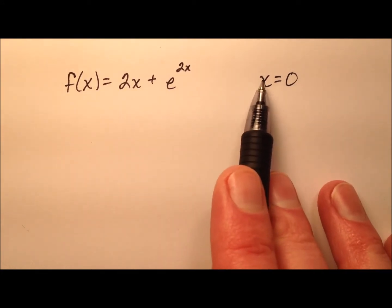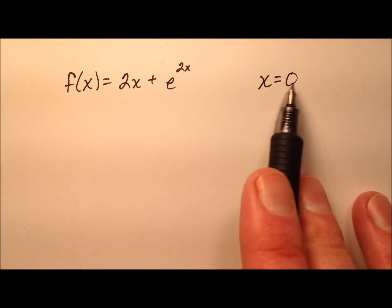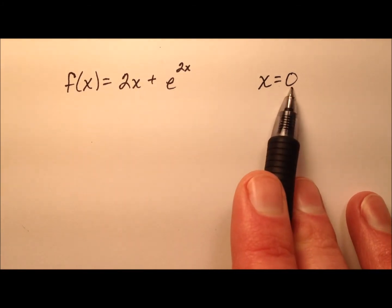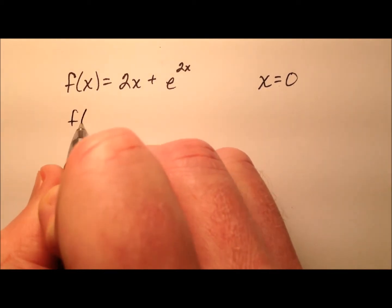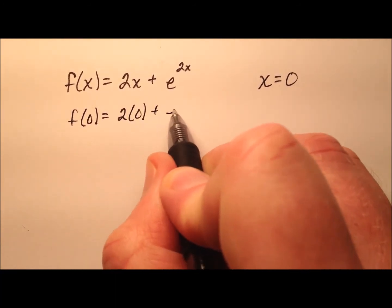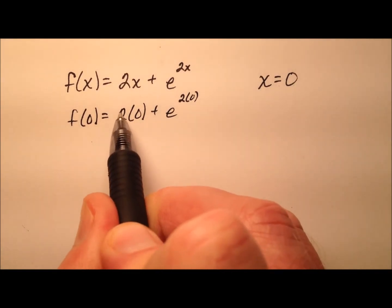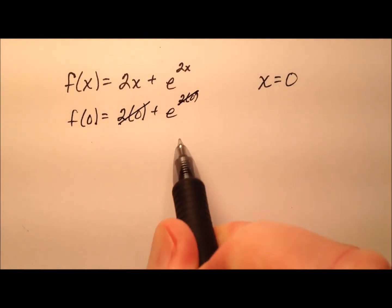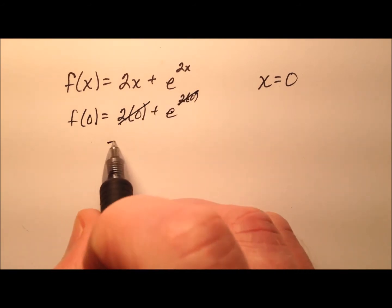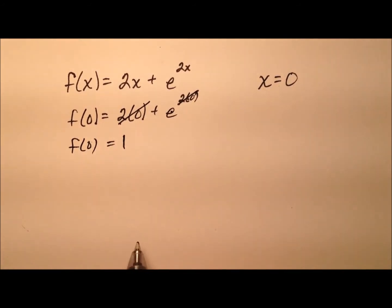I have x equals 0, so let's plug 0 into our function to find the accompanying y value. f(0) equals 2 times 0 plus e to the power of 2 times 0. 2 times 0 is 0, and e to the 0 equals 1, so f(0) equals 1.